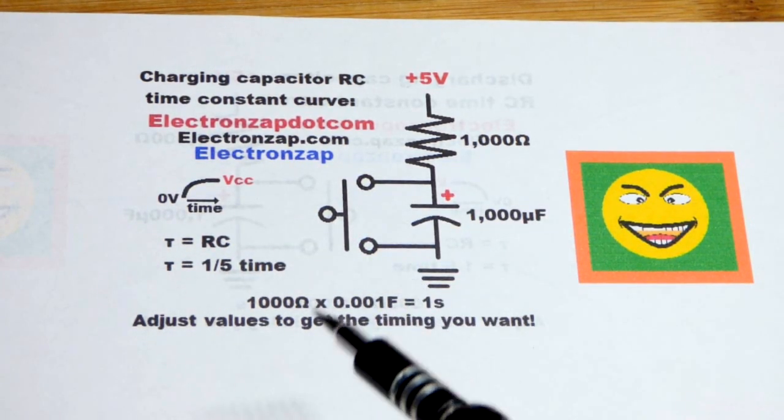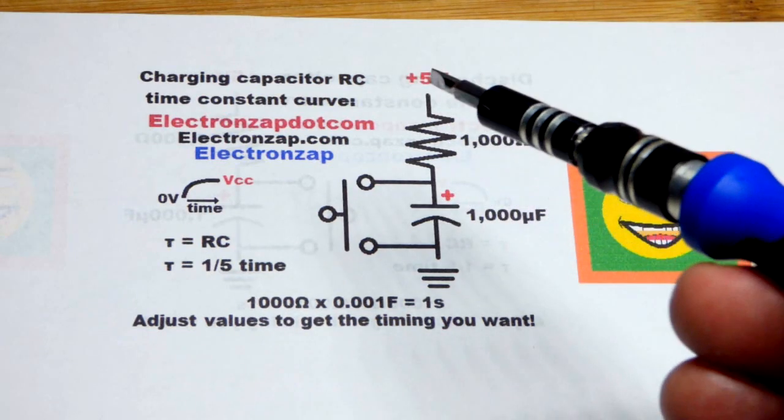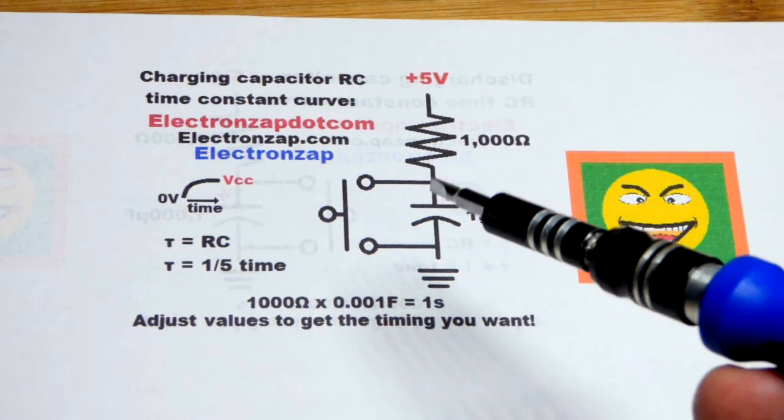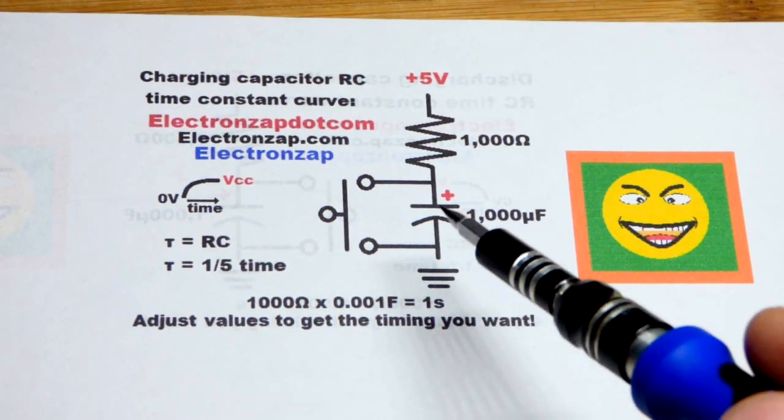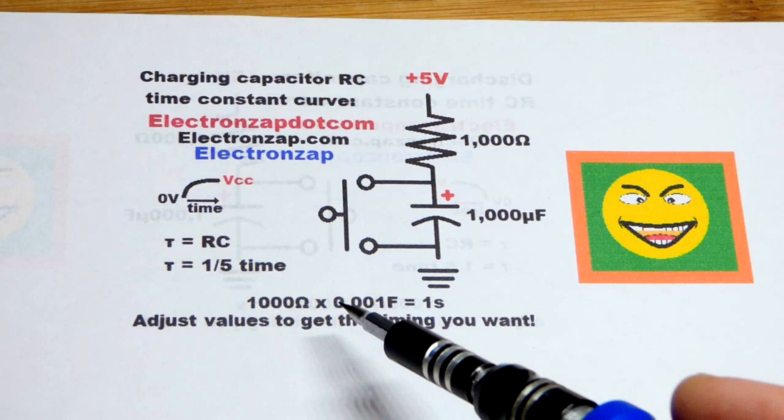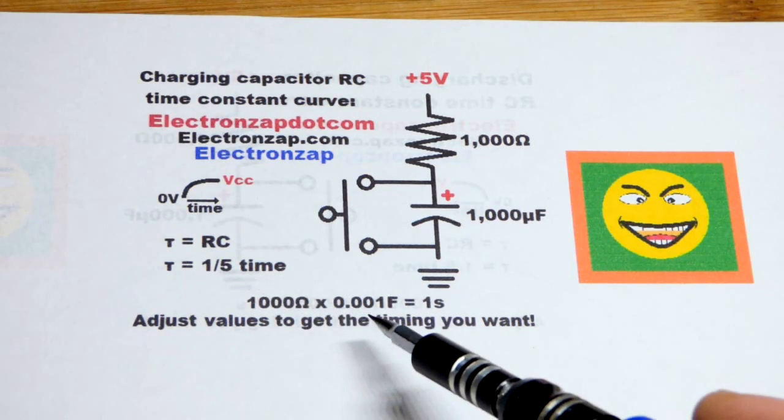So if you have a 1000 ohm resistor like we have here, a kilohm, and you have one thousandth of a farad, which is 1000 microfarad or 0.001 farad, you multiply those two together. Makes the math easy: 1000 times one thousandth is one, that's one second.